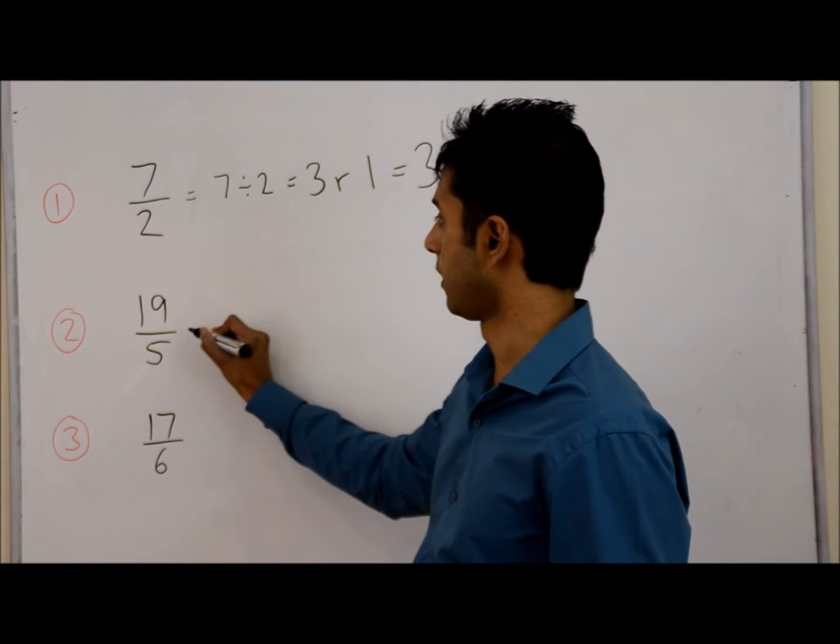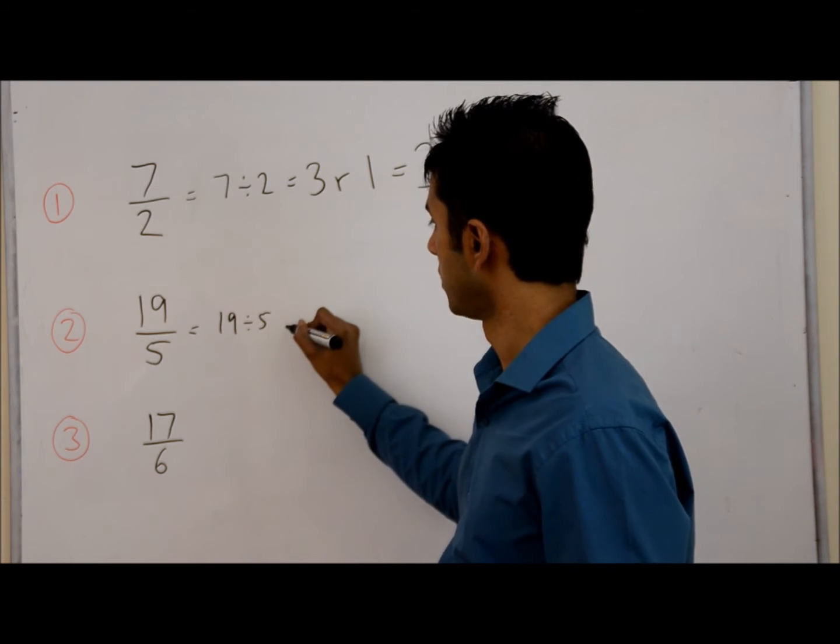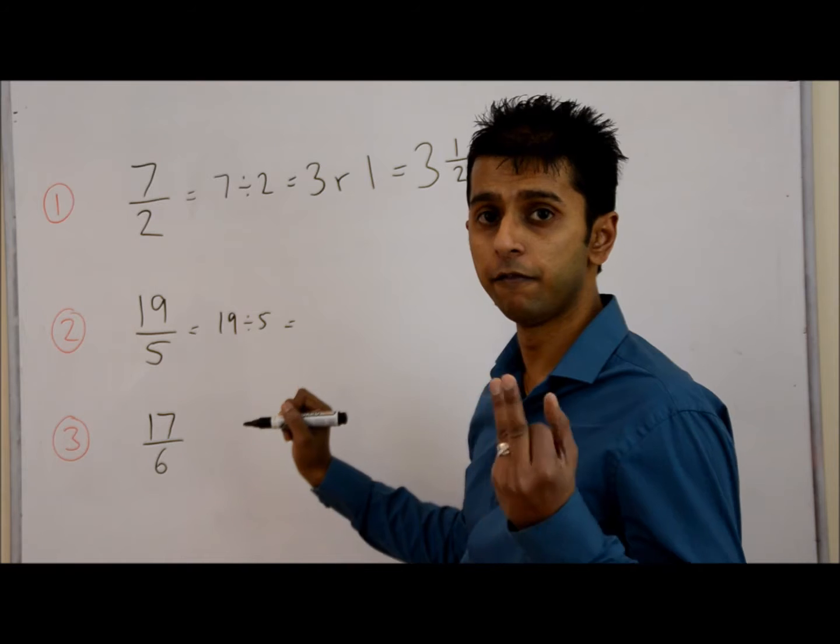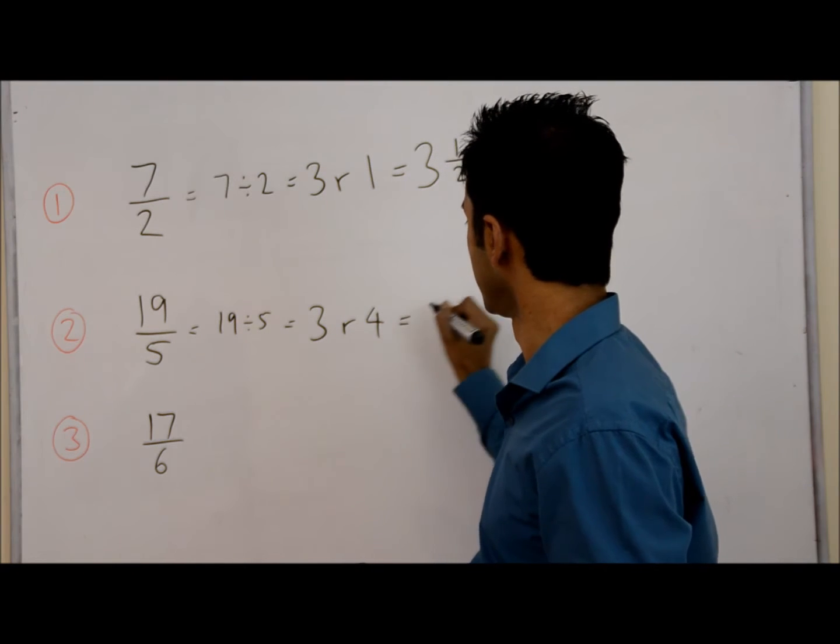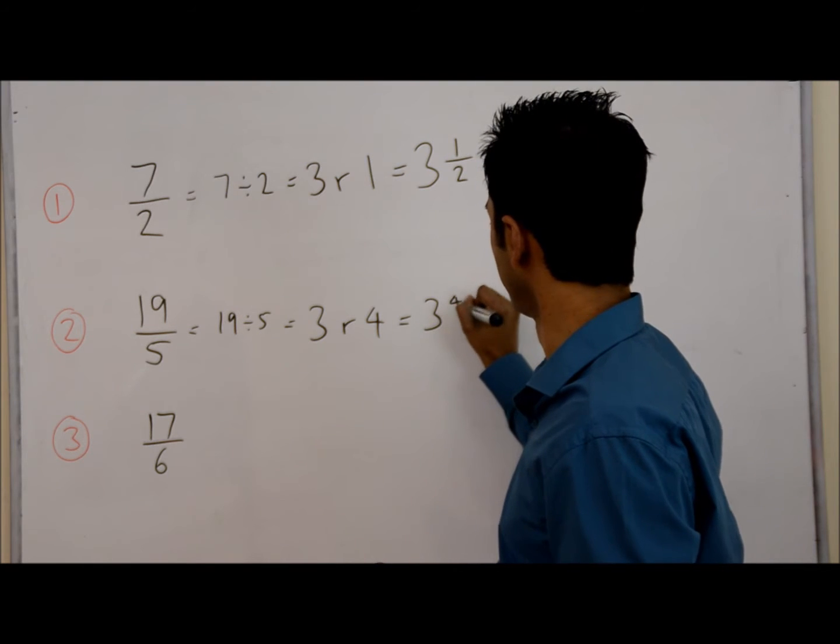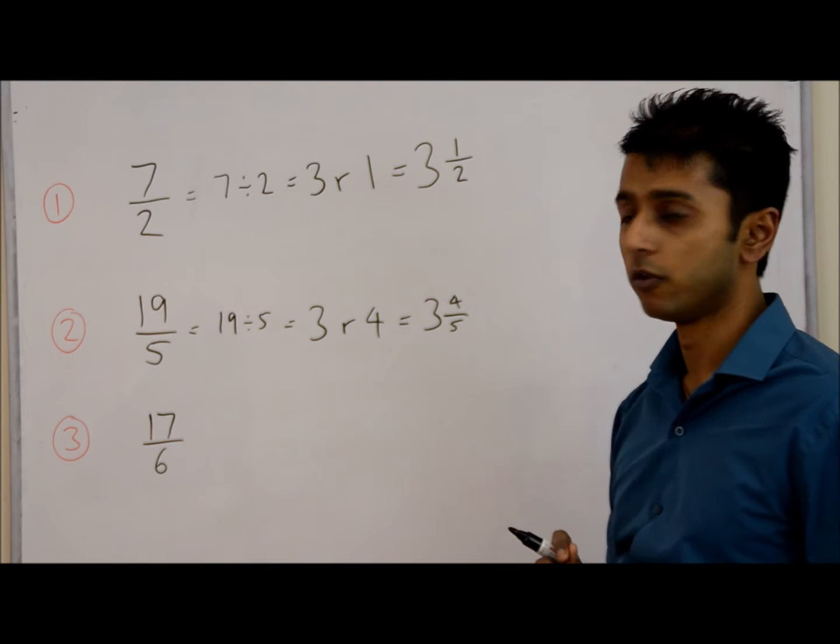Let's try 19 over 5. So we need to do 19 divided by 5. So that gives you 5, 10, 15, 3 times, with a remainder of 4. So that's 3, remainder of 4, divided by 5. So 3 and 4 fifths.